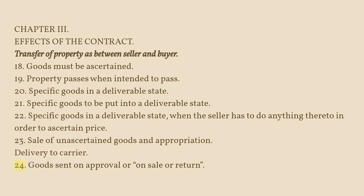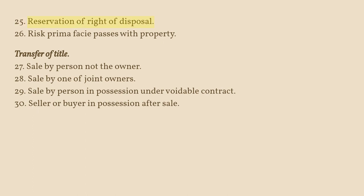Delivery to Carrier. Section 24: Goods Sent on Approval or on Sale or Return. Section 25: Reservation of Right of Disposal. Section 26: Risk Prima Facie Passes with Property. Transfer of Title. Section 27: Sale by Person not the Owner. Section 28: Sale by One of Joint Owners. Section 29: Sale by Person in Possession under Voidable Contract. Section 30: Seller or Buyer in Possession after Sale.